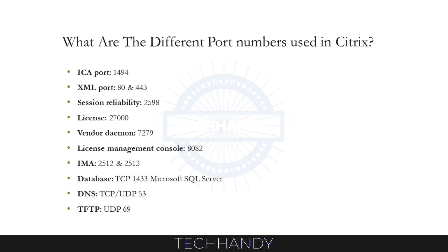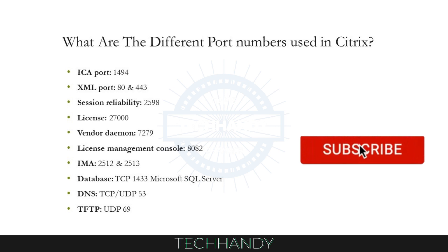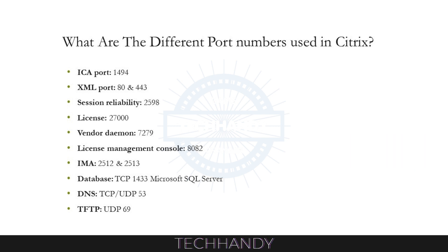What are the different port numbers used in Citrix? ICA uses port 1494. XML port: 80 and 443. Session reliability: 2598. License: 27000. Vendor daemon: 7279. License management console: 8082. IMA: 2512 and 2513. Database: TCP 1433 (Microsoft SQL Server). DNS: TCP/UDP 53. TFTP: UDP 69.